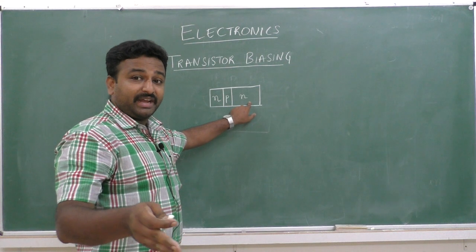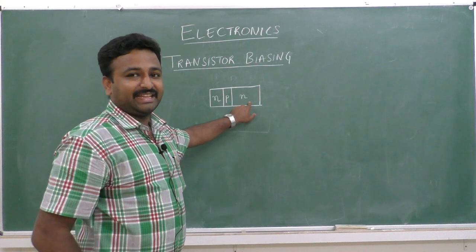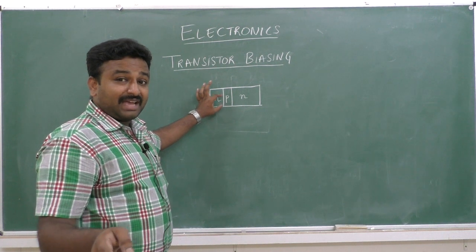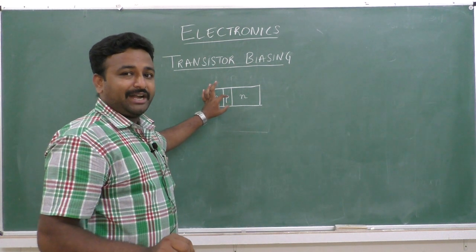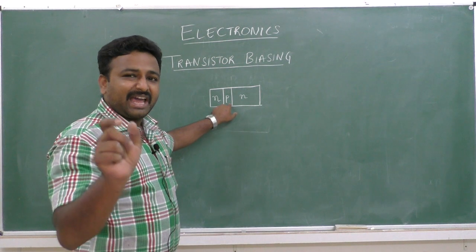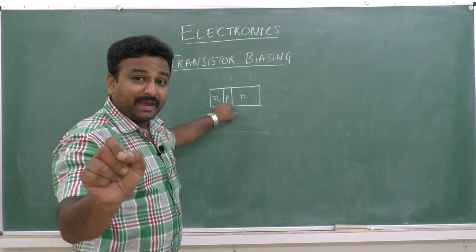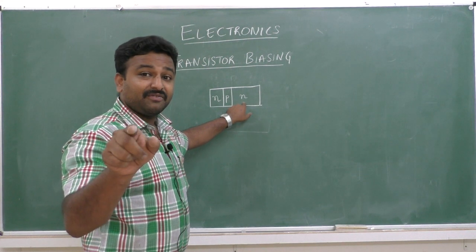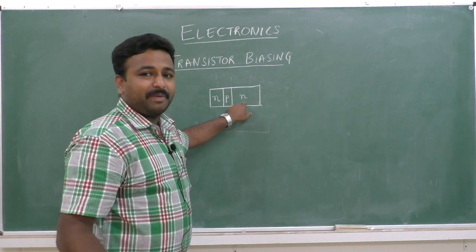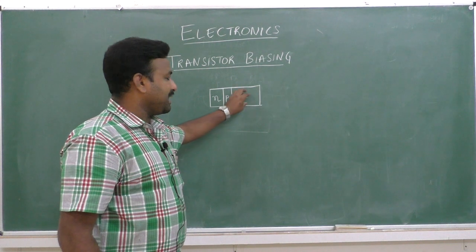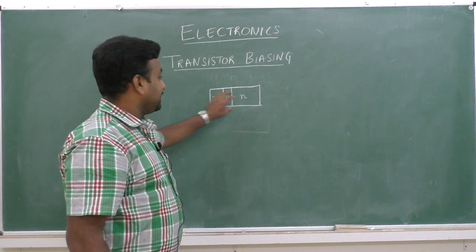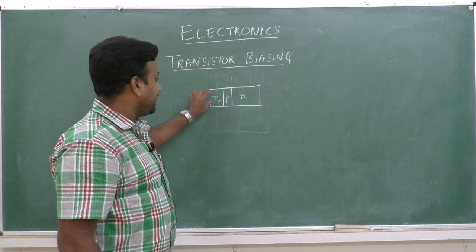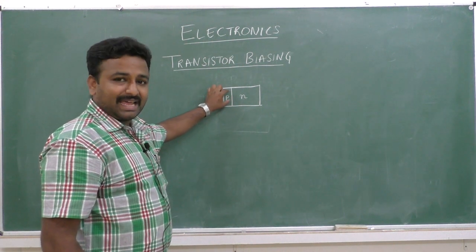So to summarize the NPN transistor construction: the moderate-sized region is heavily doped, the narrow region has low doping concentration, and the large-sized region has moderate doping concentration.